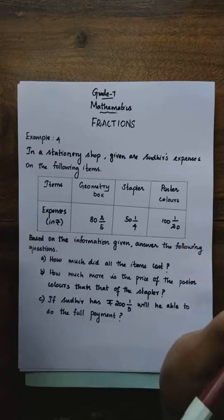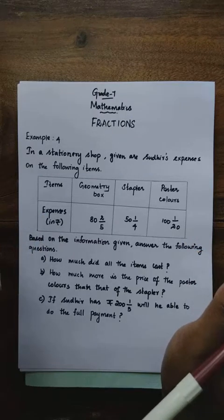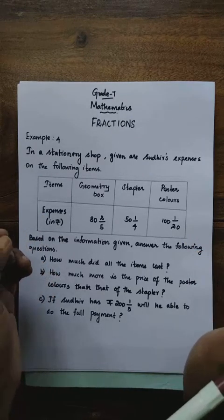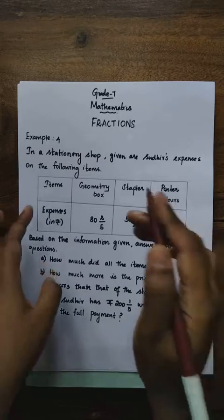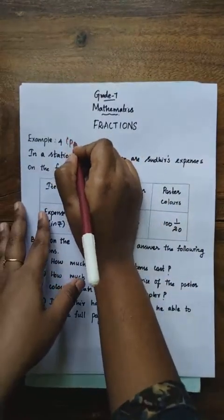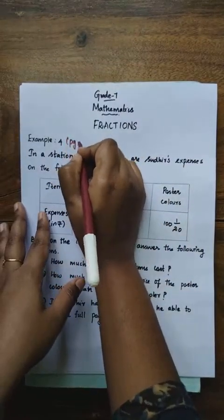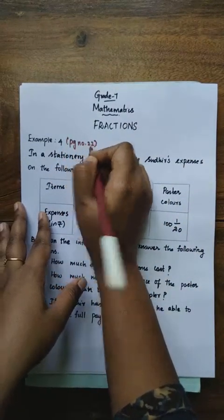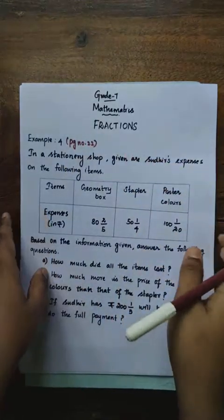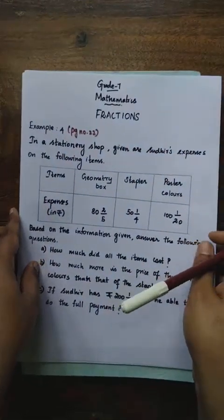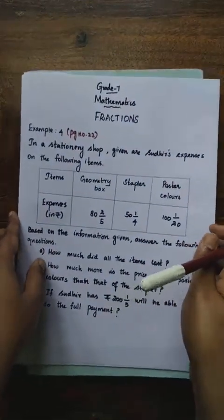Today we are going to see one word problem. That is Example 4, page number 22. Take your book and turn to page number 22. Example 4, page number 22.